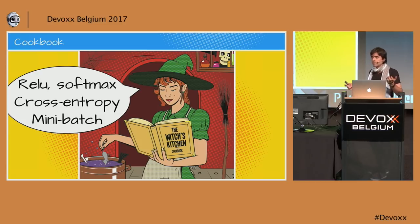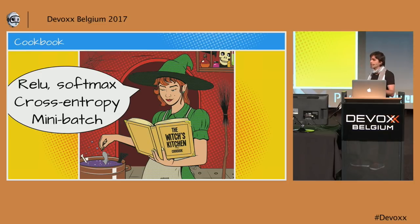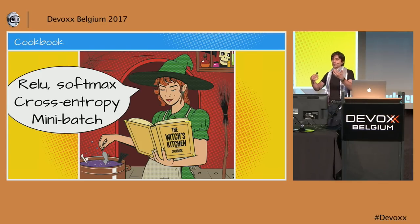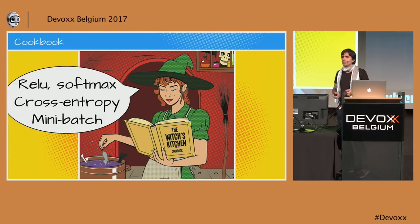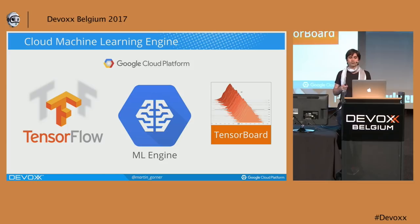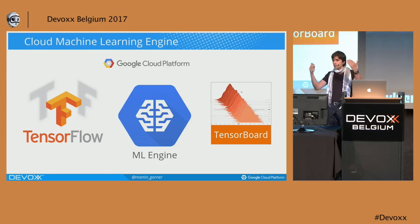So we have all the ingredients: layers, ReLU activation on intermediate layers, softmax activation on the last layer, cross-entropy as our distance function because it's a classification problem, and we train by batches. We have our model and tools to train it. The model is written in TensorFlow. I'll be using ML Engine to train and deploy it, and TensorBoard to visualize the loss during training.